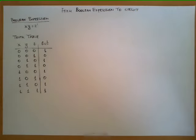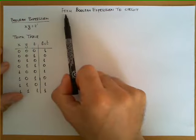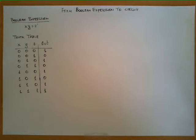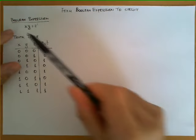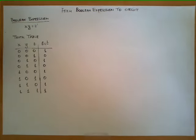In this video we're going to show the procedure to derive a circuit from a given Boolean expression. We start the example with this given Boolean expression: x times y plus z prime.